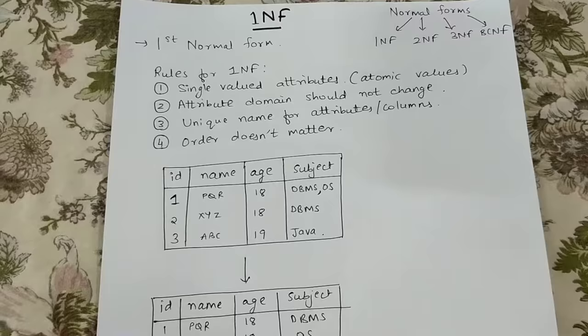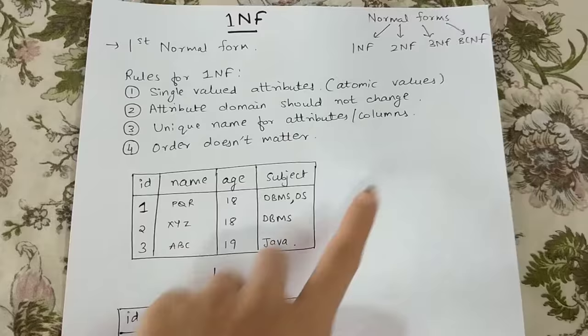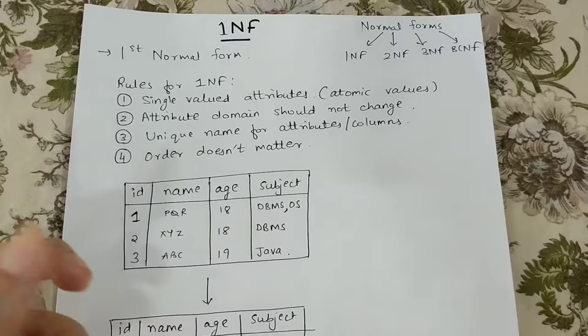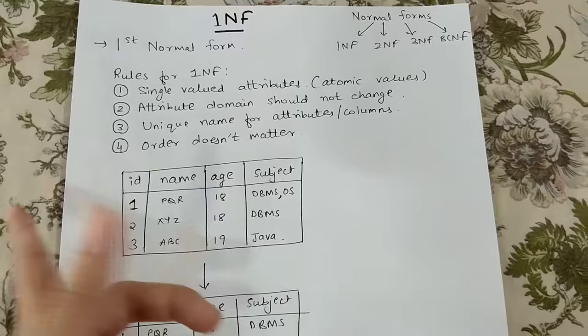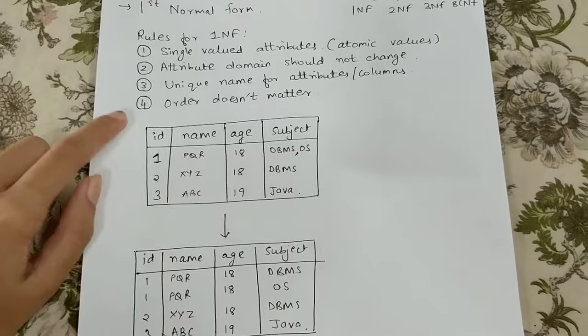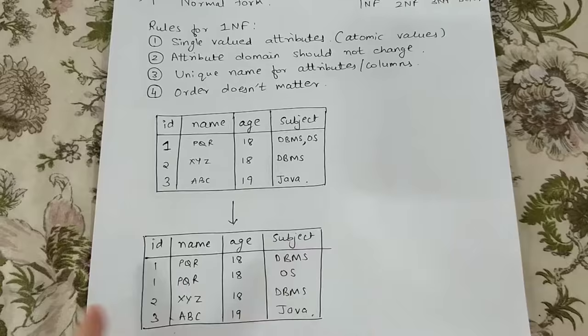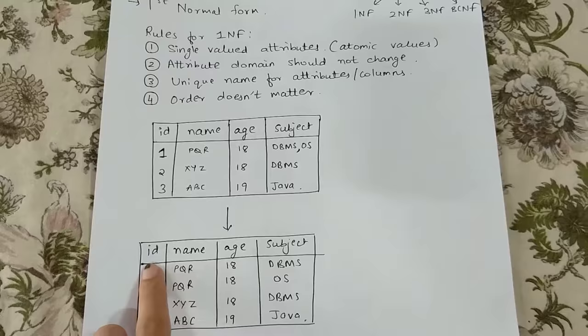Rule number three says unique names for attributes or columns — each column should have a unique name. No two columns can have the same name, as that would cause confusion. Rule number four is that order doesn't matter — you can write columns in any order, there is no compulsion that ID must come first. So these are the four rules of 1NF.